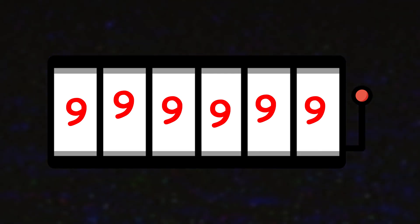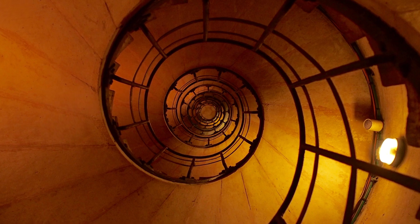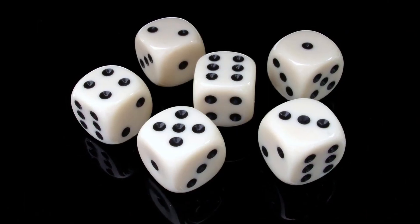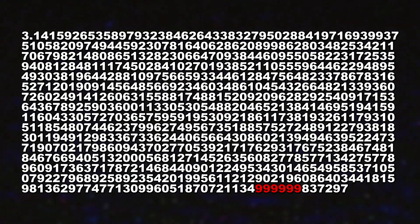The chance of six specific decimal places all being nine is one in a million. Pi however is infinite, and this was bound to happen at some point. And plus, this isn't even the longest repeat.